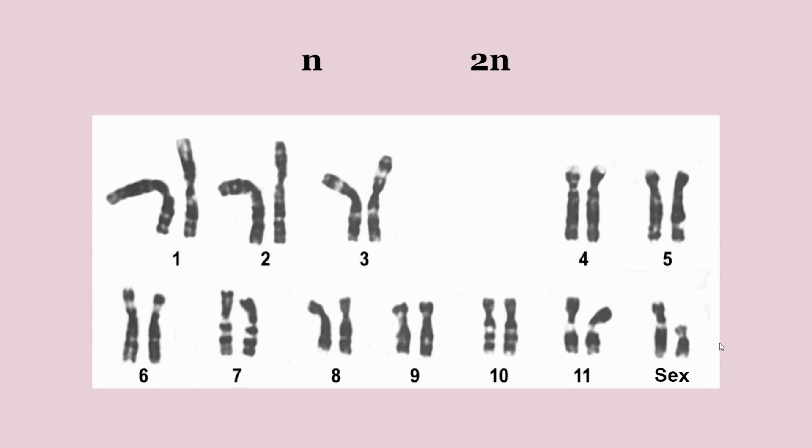You can tell an organism is haploid or diploid by its karyotype, because if it's diploid, you should notice that there are two of each chromosome, with the exception of the sex chromosomes, which can sometimes appear different from each other, like X and Y chromosomes.